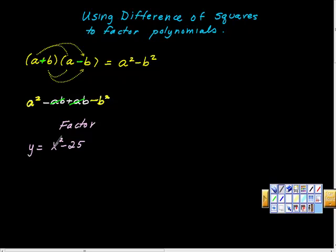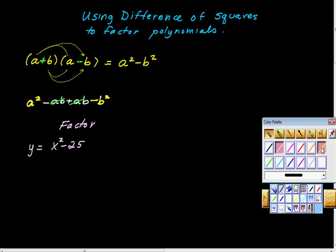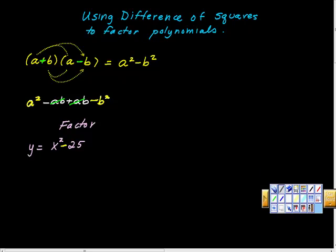x squared is x times x. Here's this negative sign. This one here is this one right here. And then is 25 a perfect square? And I think that it is. So I'm going to rewrite this. I'm going to say that x squared is x squared, that this negative sign is this one, and then 25 is 5 squared.